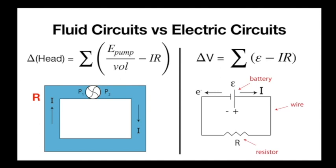So let's finally make the swap over to electric circuits. The circuit we were looking at before had a pump and a pipe with resistance. Now instead we have a battery and a wire that leads through a resistor — same thing: something introducing energy density and something taking it away. With fluids, we summarize the change in pressure, potential energy density, and kinetic energy density into the change in total head.